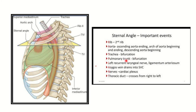Also at this level: the pulmonary trunk bifurcation, the left recurrent laryngeal nerve — importantly, not the right recurrent laryngeal nerve — the ligamentum arteriosum, the azygos vein draining into the superior vena cava, cardiac plexus, and the thoracic duct.